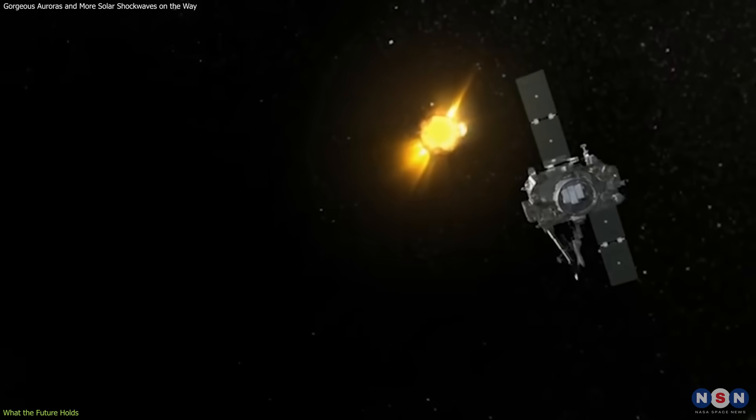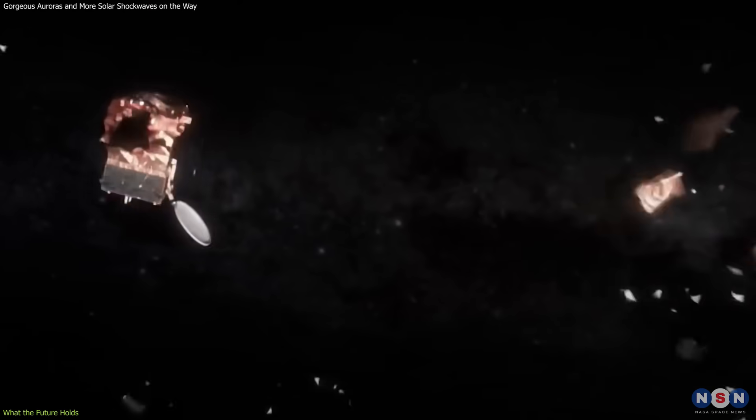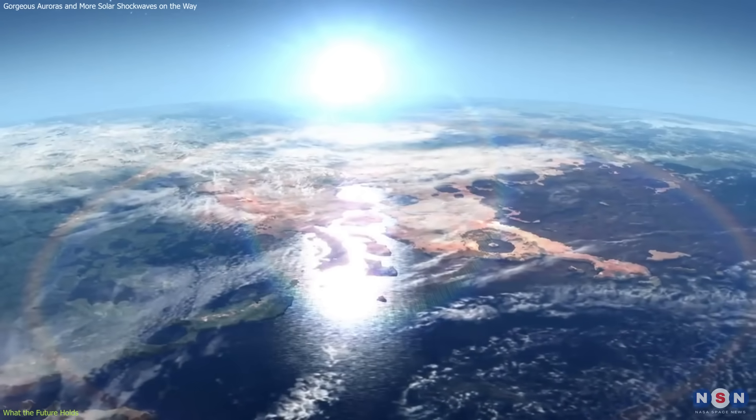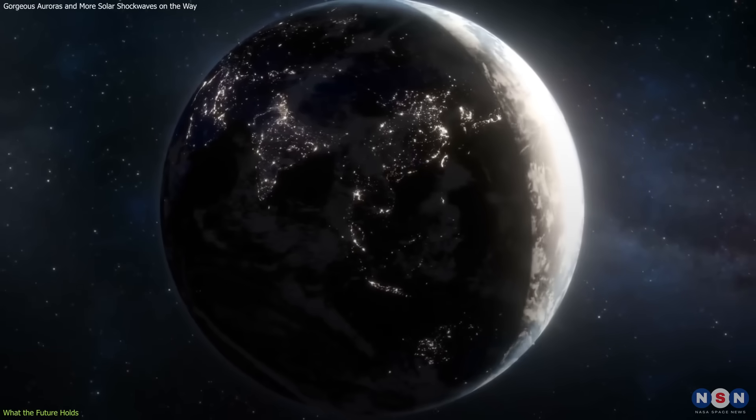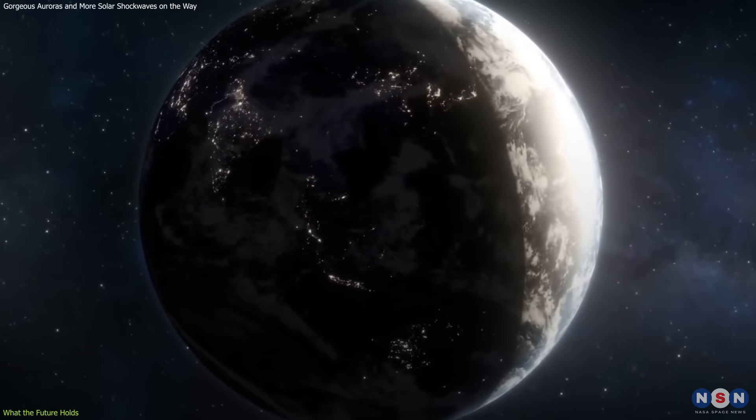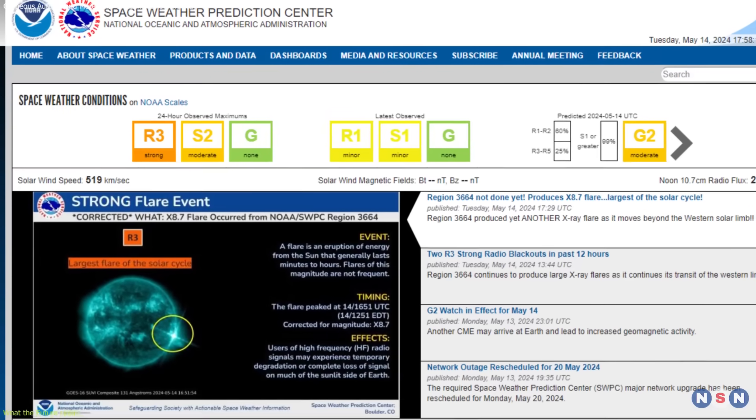Severe solar storms like those emanating from this sunspot could disrupt Earth-orbiting satellites, distort the Earth's atmosphere, and cause surges in electrical power grids. These technological disruptions highlight the critical importance of advanced space weather forecasting in safeguarding our modern infrastructure.